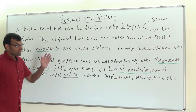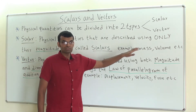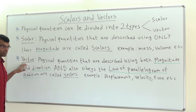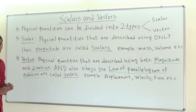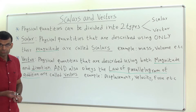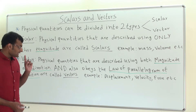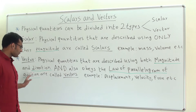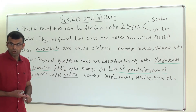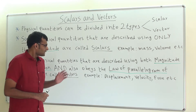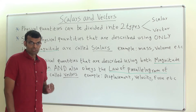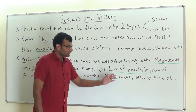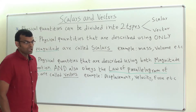Some examples of scalars are mass and volume. As per the definition of vector, physical quantities that are described using both magnitude and direction, and that must also obey the law of parallelogram of addition, are called vectors. Some examples of vectors are displacement, velocity, and force.